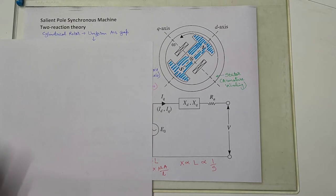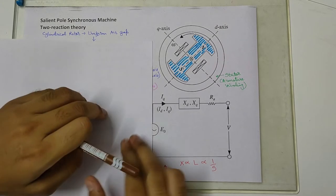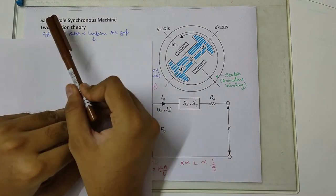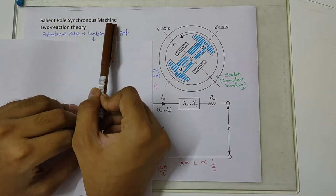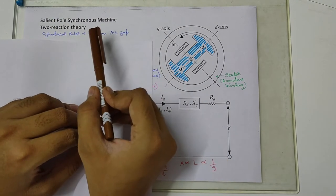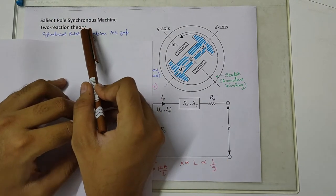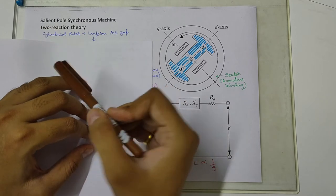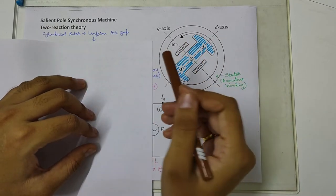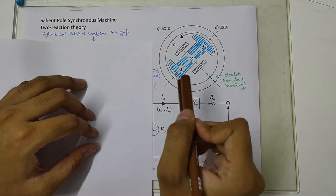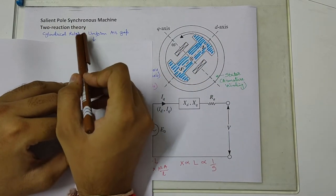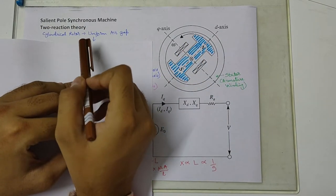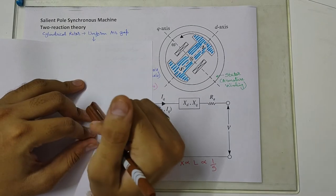Hello friends, in this video we are going to learn about a salient pole synchronous machine and to explain the operation of salient pole synchronous machine, the theory which is known as two reaction theory.